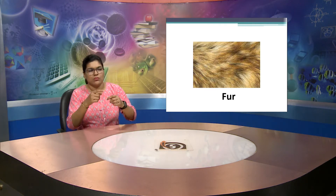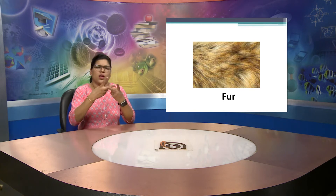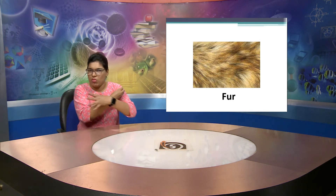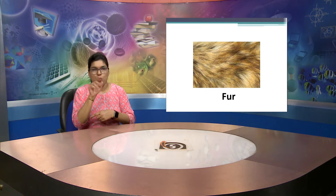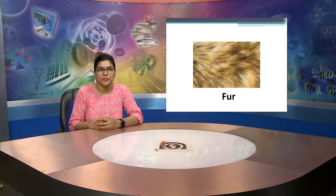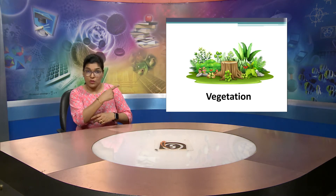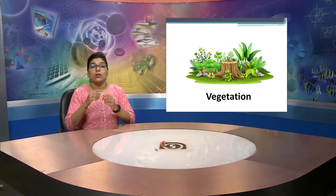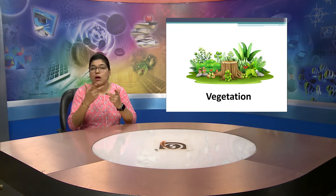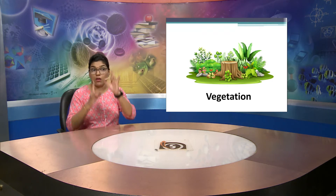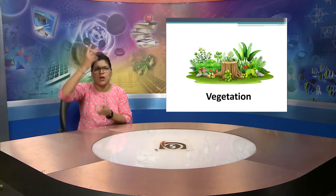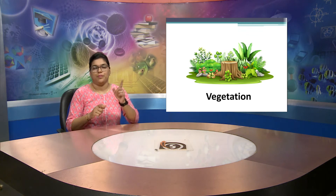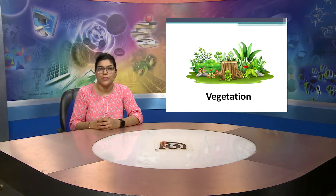The next word is fur. Different animals have different kinds of fur. There are wild animals which have fur, and sometimes a few birds also have fur. The next word is vegetation. Some of us may get confused with the word vegetable, but vegetation is different from vegetable. Vegetation is the name for the group of all plants.